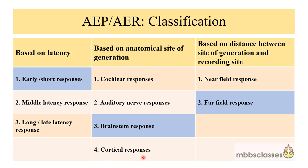The auditory brainstem response, which is our today's class, is an early response because it is recorded within the first 10 milliseconds after the auditory stimulus. Since it is a brainstem response, it originates from the brainstem area. Whenever a stimulus is given, on the basis of the site of the electrodes, the auditory evoked potentials can be divided into near-field response and far-field response.